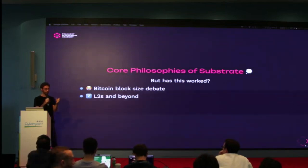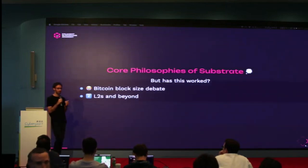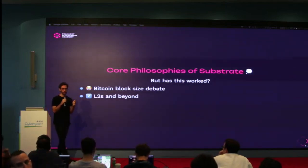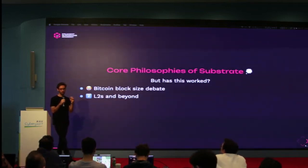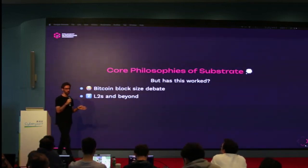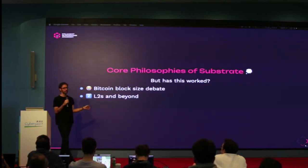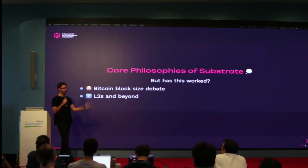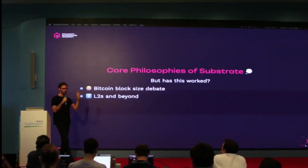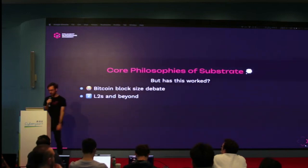I learned this piece of history rather recently. Ethereum for years was going in the direction of delivering execution sharding — sharding at the execution layer with multiple shards. Now with the L2-centric narrative, it's completely different. Ethereum is going to remain a settlement layer, actually kind of like Polkadot when you think about it.